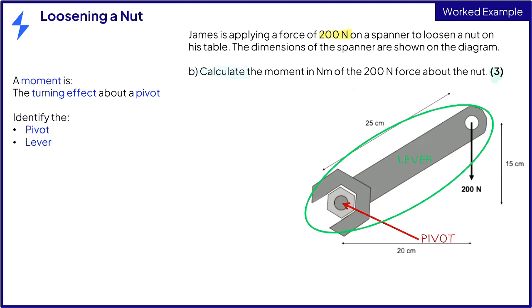The lever, the part of the system the force is being applied to, in this question is the spanner. The load in this question is the 200 newton force from James moving the spanner clockwise.